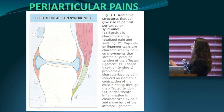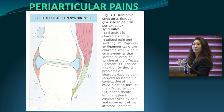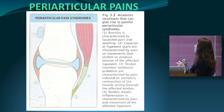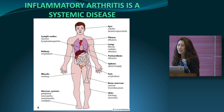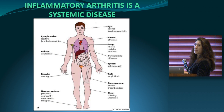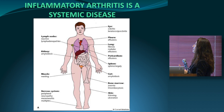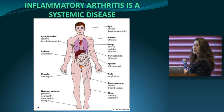Besides true arthritis, you can have periarticular problems — inflammation of tissues surrounding the joints, like bursa, tendons, and ligaments — which can also give joint pain. Many people say they have arthritis because their joint hurts, but it may just be those surrounding soft tissues. Inflammatory arthritis is a systemic disease where the whole body is inflamed and can involve skin, liver, kidneys, lymph nodes, lungs, and blood vessels.